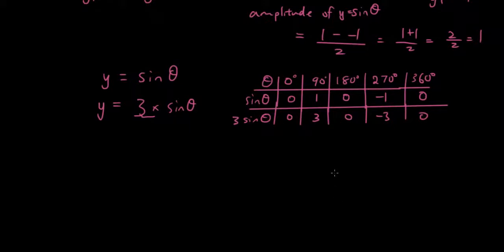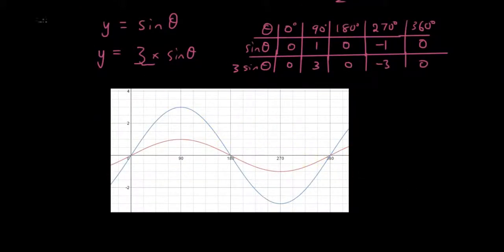If I draw this graph together with sine theta, it'll look like this. The two equations will look like this, where the red line is y equals sine theta, where the maximum point is 1 and the minimum point is negative 1, and the blue line is y equals 3 sine theta, where the maximum is 3 and the minimum is negative 3.